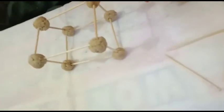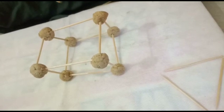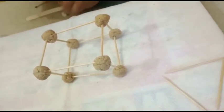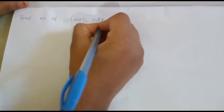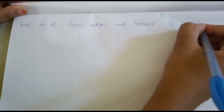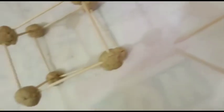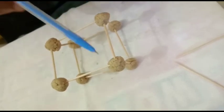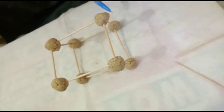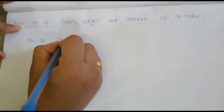Now let's count the total number of faces, corners, and edges of this cube. First, let's count the total number of corners. As I told you, these balls are the corners. Let's count: one, two, three, four, five, six, seven, eight. Therefore the total number of corners is equal to eight.